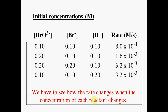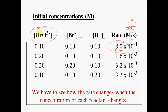We've collected data by running experiments measuring the molarities of bromate, bromide, and hydrogen ion, then measuring the rate of the reaction. The rate is detected by observing some change — maybe a precipitate forms, a color change, or an energy change — something that tells us the reaction is taking place.